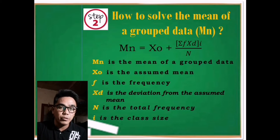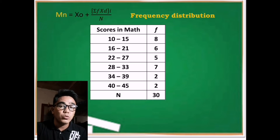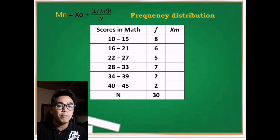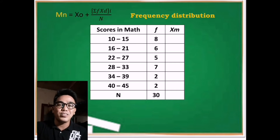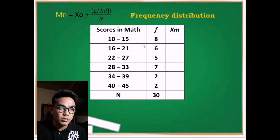Let us now combine the formula with the frequency distribution. We need to add another column to solve the class mark, symbolized as x-sub-m. The class mark is important because it will be the basis for the assumed mean. To solve it, simply get the average of the lower limit and upper limit of each class interval. For example, adding 10 and 15 gives 25, and half of that is the class mark: 12.5.